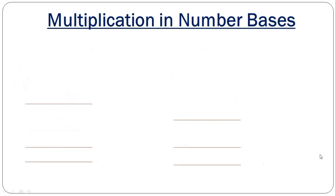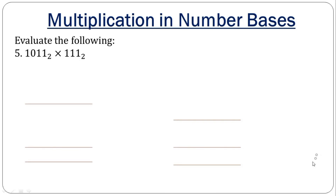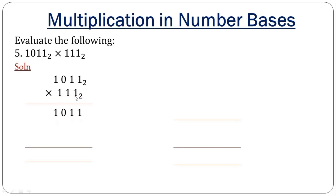Now we go to multiplication of numbers in number bases. Looking at the first example, we arrange them like our normal multiplication. When 1 multiplies the whole number you get one row, then 1 multiplies again for the next row, and 1 multiplies again for the third row. Always remember to arrange under the correct place value that you multiplied, just like multiplication in base 10.